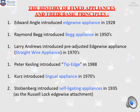The history of fixed appliances: Edward Angle introduced edgewise appliances in 1928. Raymond Begg in Australia introduced Begg appliances in the 1950s. In the 1970s, Larry Andrews introduced pre-adjusted edgewise appliances, also called straight-wire appliances. Peter Kesling introduced tip-edge in 1988. Lingual appliances were introduced by Kurz in the 1970s, and self-ligating appliances were introduced by Stolzenberg in 1935, using the Russell-Lock edgewise attachment.